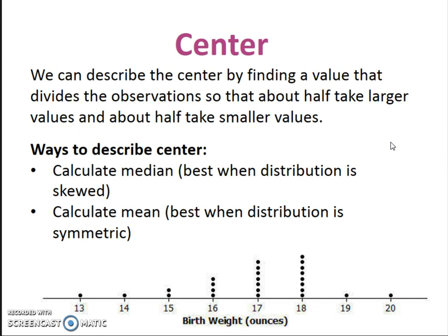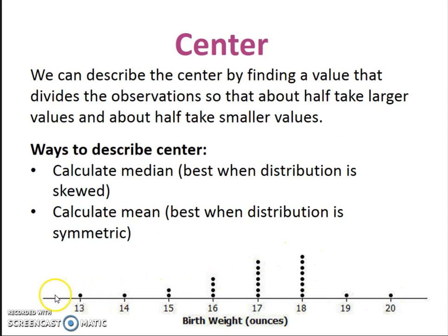The next part of SOCS is center. You can describe center by finding a value that divides the observations so that half are larger and half are smaller. Two ways to measure center: median or mean. Median is going to be best when the data is skewed; mean is best when it's symmetric. So if I'm looking at this graph down here — it's kind of tailing to the left, so it's skewed left — I would probably find the median to describe the center.